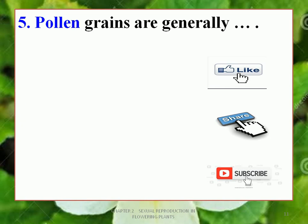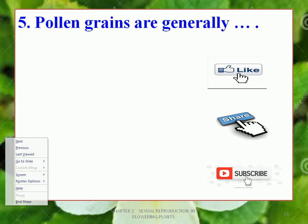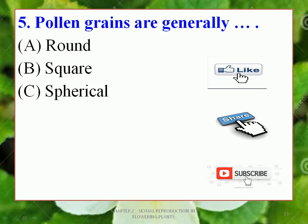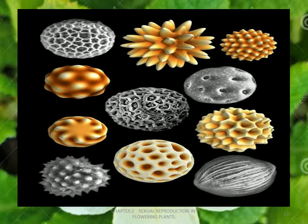Question 5: Pollen grains are generally DASH. Options: A. Round, B. Square, C. Spherical, D. Rectangular. The correct option is C — Spherical. Yes, friends, pollen grains are generally spherical. Here are a few examples of different pollen grains from different plants, and we can see that all of them have a spherical shape.